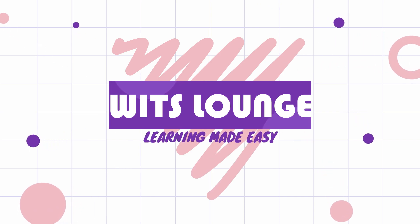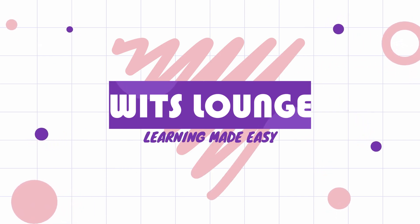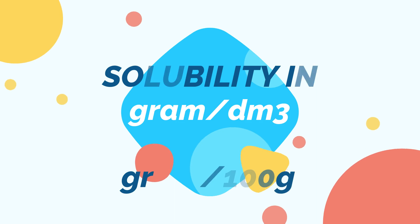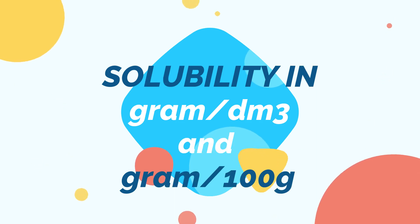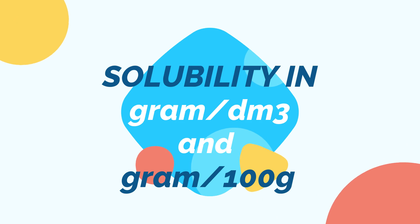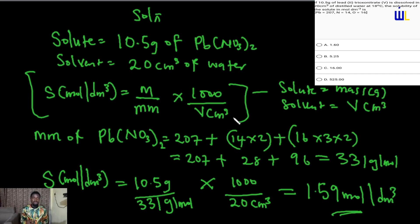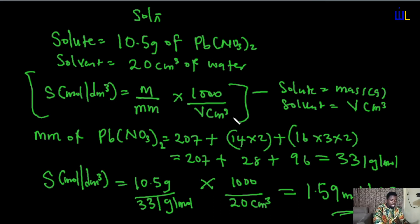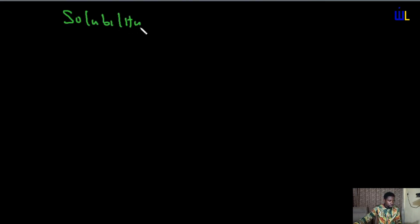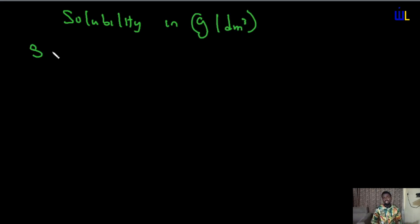Hello guys, this is Wits Lounge — Learning Made Easy. In today's video we're going to be understanding the formulas to find solubility in gram per dm³ and gram per hundred gram. We'll consider two more units of solubility. The next unit we are going to consider is solubility in gram per dm³.